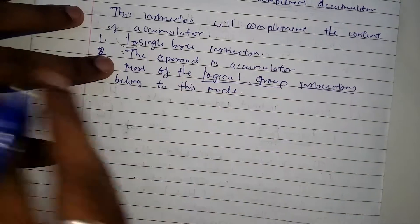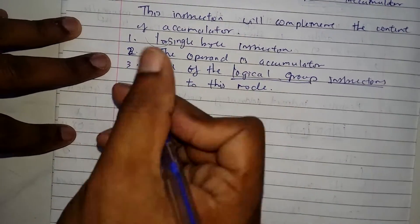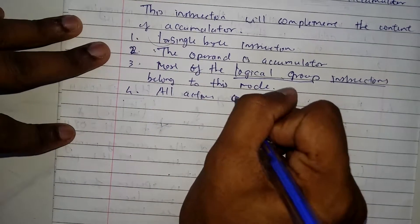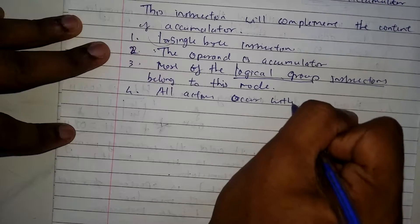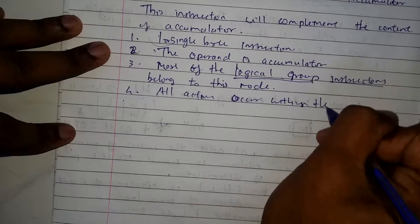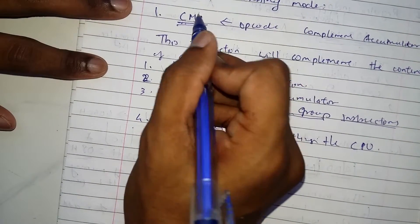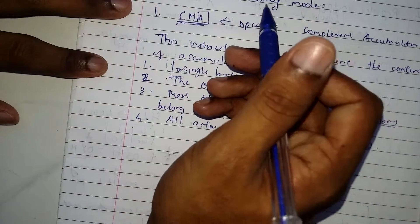The fourth point I'd like to mention here is all actions occur within the CPU. As you guys can see there's an opcode which only has the accumulator.